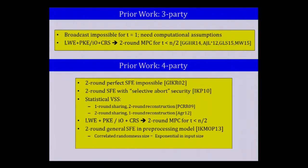For the four-party setting, we know that two-round perfectly secure MPC is impossible. If you relax it to selective abort security, you can get a two-round protocol. But even fundamental questions like statistical VSS — we don't know how to do it in a total of two rounds. We know one-round sharing with two-round reconstruction, or two-round sharing with one-round reconstruction, but not one-round sharing and one-round reconstruction. In the preprocessing model, we know two-round general SFE giving statistical security for NC1 functions, but the correlated randomness size grows exponentially in the input size. This is the state of affairs prior to our work.